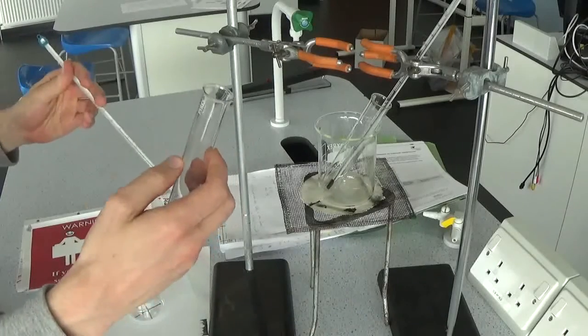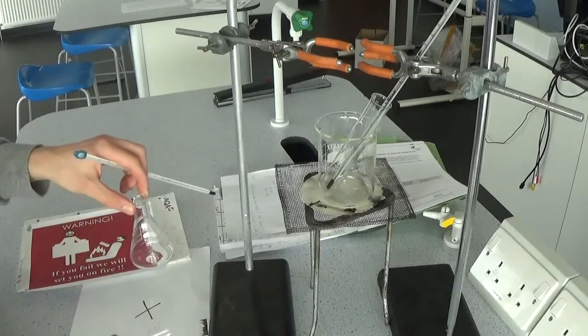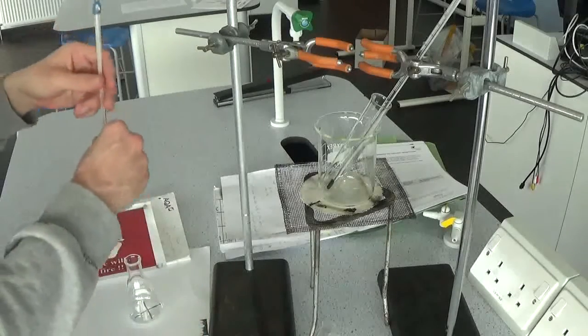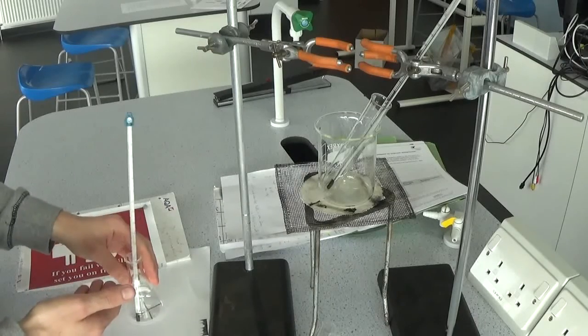If I've got the 10 cubic centimeters of hydrochloric acid in here, I would pour that into a conical flask. What I would do is take the starting temperature of that.